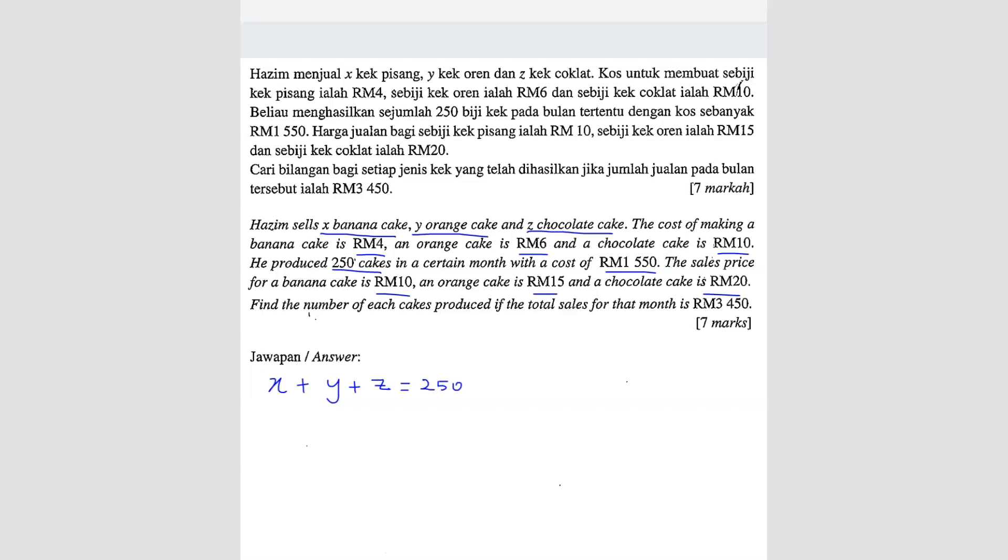Okay, this is the first equation. In a certain month, the cost is 1550. Now they gave you this, so you can use the cost: 4x plus 6y plus 10z equals 1550. This is the second equation.